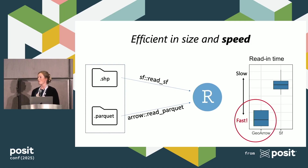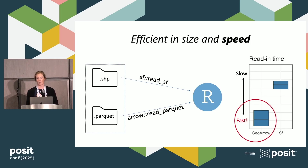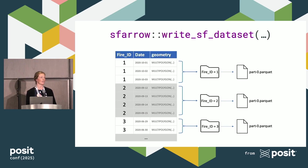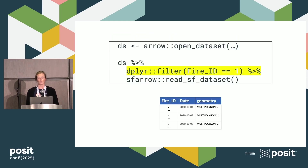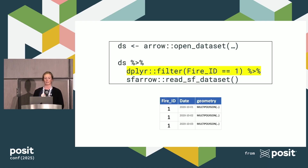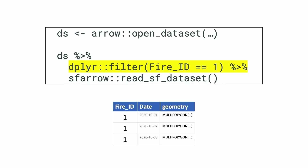If you've used Arrow before, all of the functionalities available for tabular data are also available for geospatial data. That includes things like partitioning your data by a grouping variable — here we partition by fire ID — as well as pre-filtering and pre-aggregating your data before loading it into working memory. Here we use dplyr filter to only load fire ID number one into working memory out of the whole Firelytics database. This is really well suited for our dashboard — we can very quickly load very small subsets of Firelytics into our app.